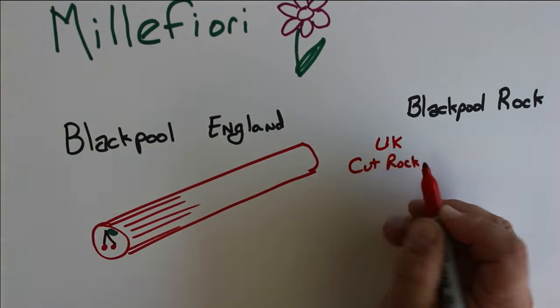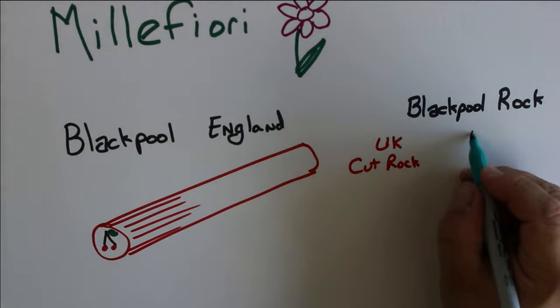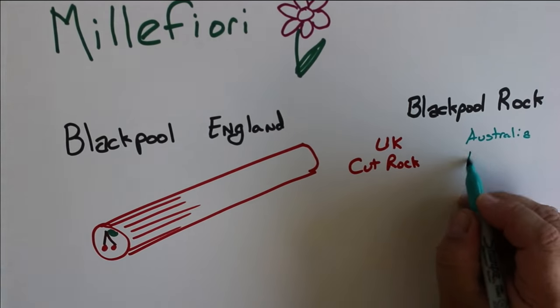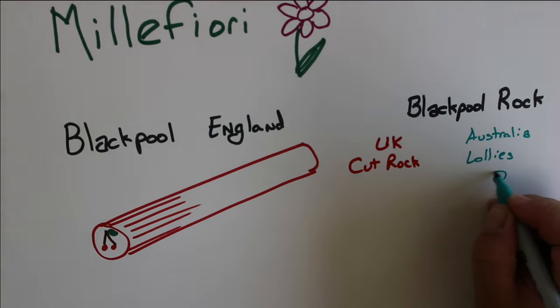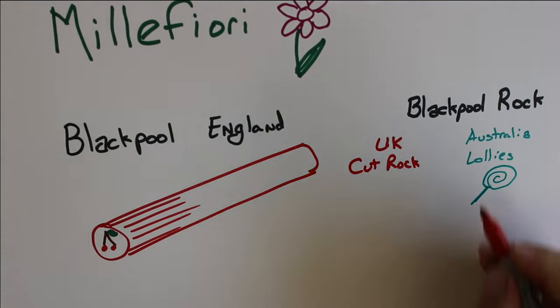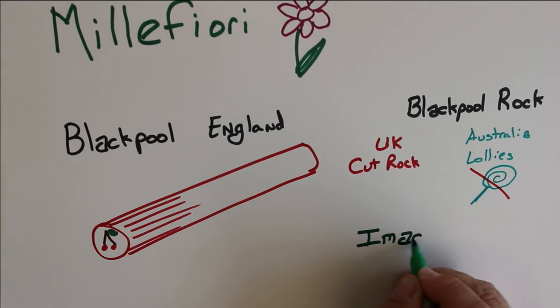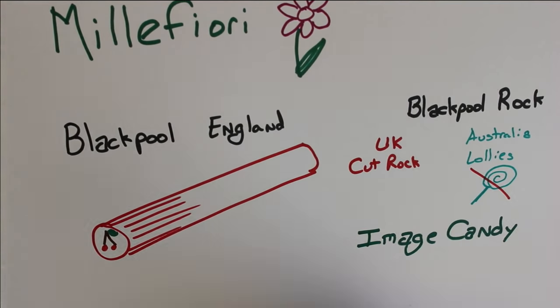In Australia they called these cut pieces of candy Lollies, but in the United States we have Lollipops, which people seem to find terminologically confusing. We've decided just to settle on image candy, which is pretty straightforward and descriptive of what the candy is.